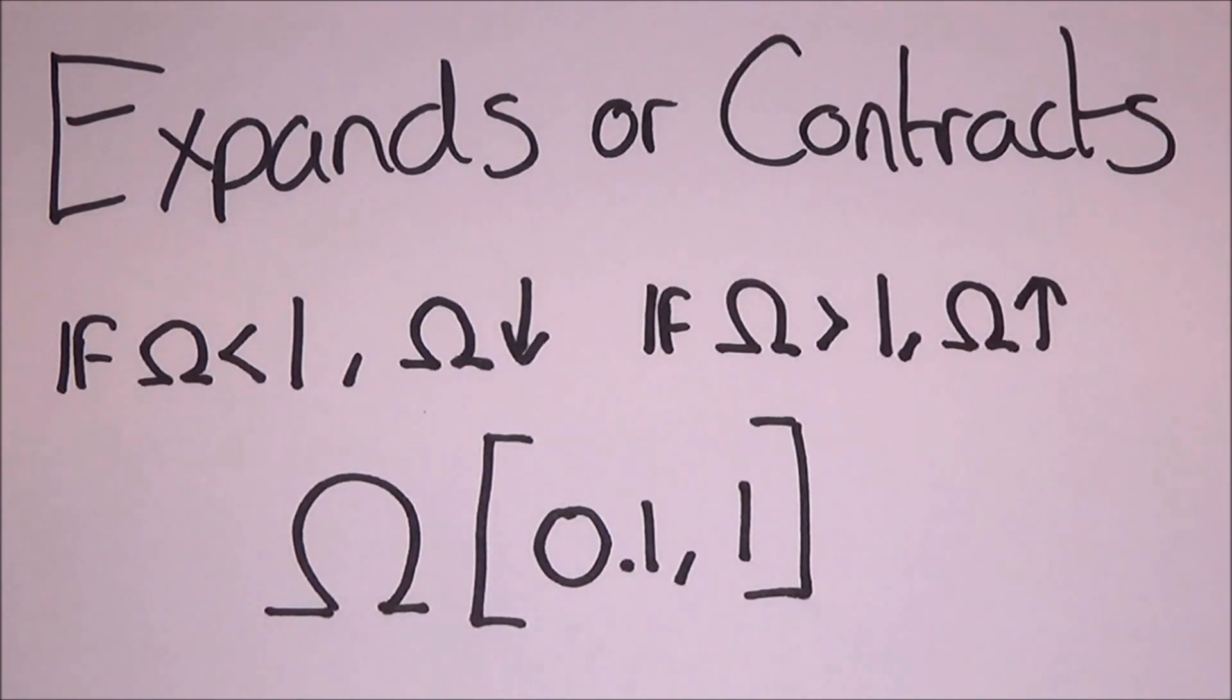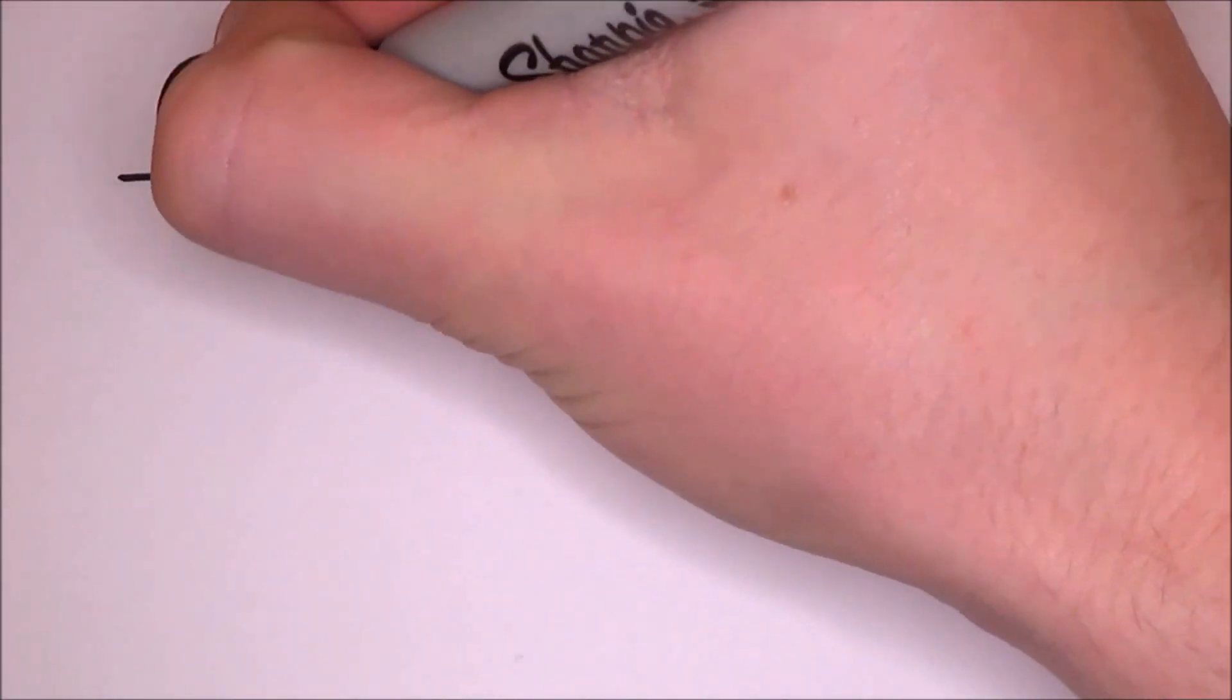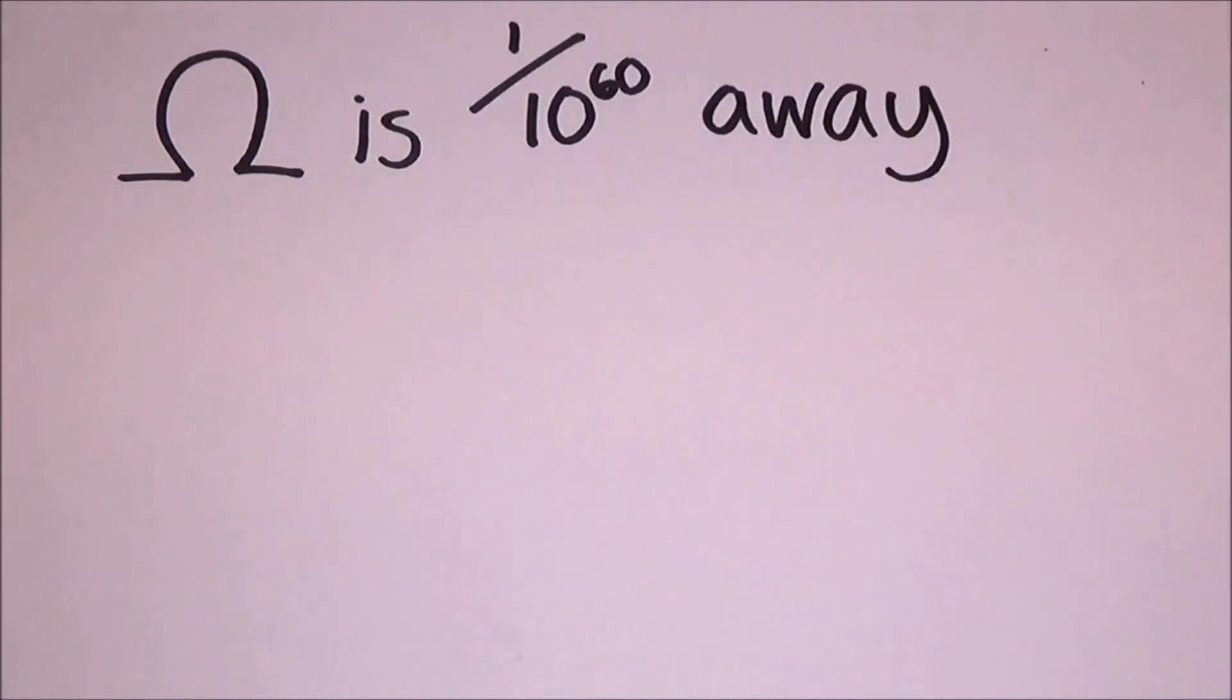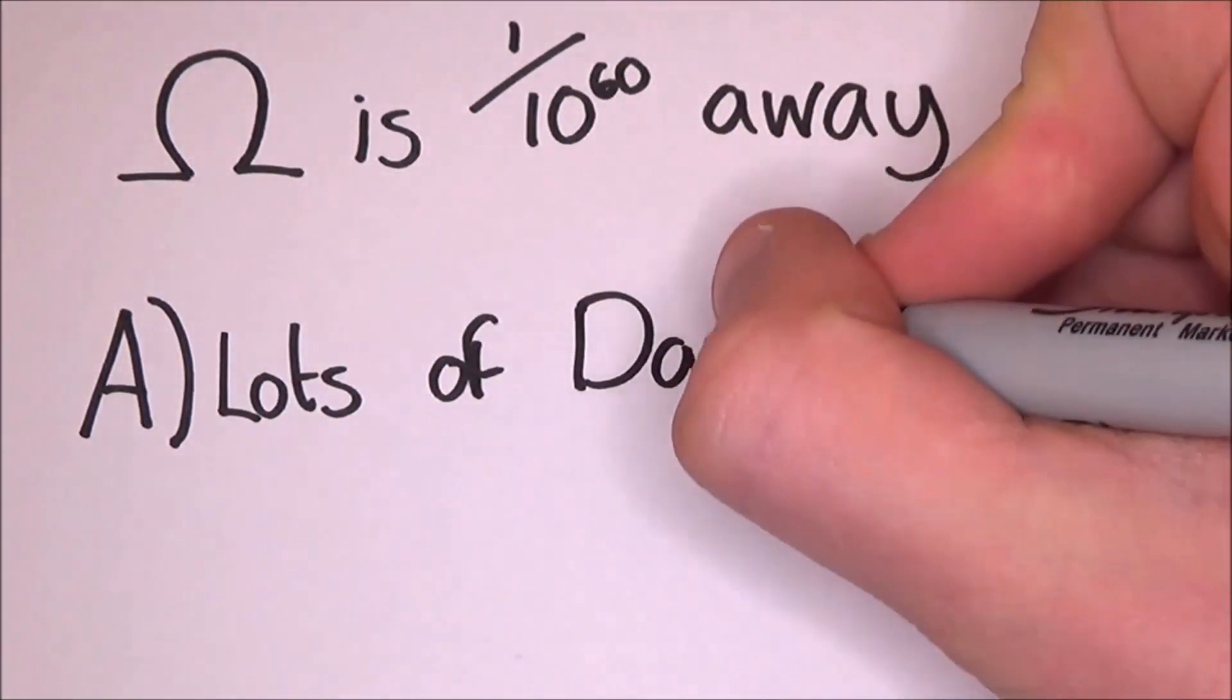In fact, it was 1 over 10 to the 60 away. Just on a quick side note, this is actually the most precise determined number in all of science. Because it is so close to 1, this has two very important implications.